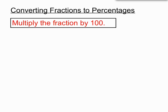Now the magic number for percentages is 100. Percentages are kind of out of 100, aren't they? So what we do to convert a fraction into percent language is to multiply the fraction by 100. Let's see a couple of quick examples and that's all we'll probably need here.